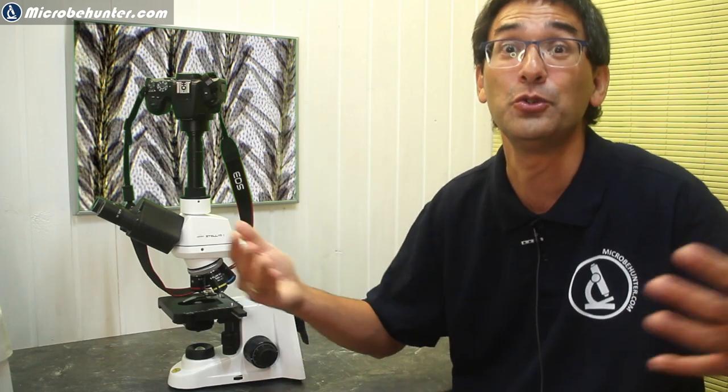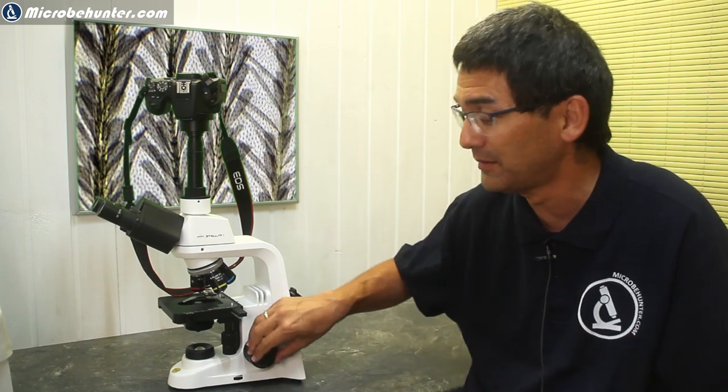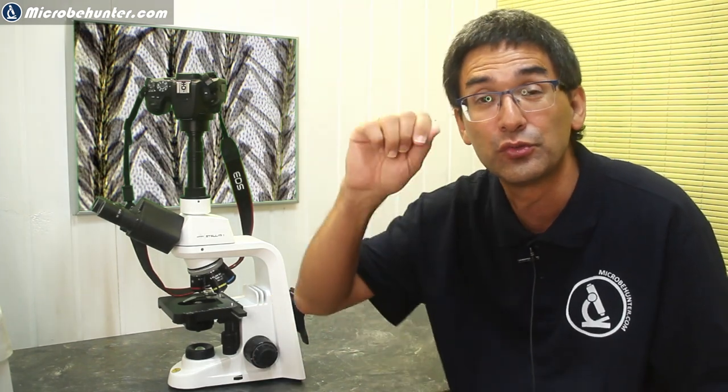And another thing that I like is that the coarse and fine focus knobs are relatively large, or at least larger than in other microscopes that I've seen. And while this is not a huge advantage, I like it a lot because it's simply easier to focus a little bit. And there's a pretty good grip here. And if the focus knobs have a larger diameter, this also allows you to control the focus a little bit more precisely. I know this is a little bit a question of taste, but it's still something that I would like to mention.